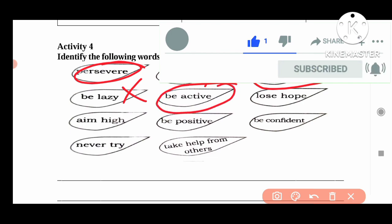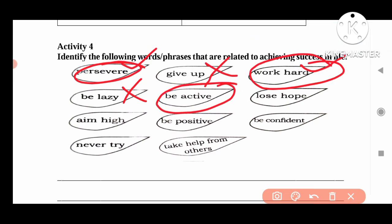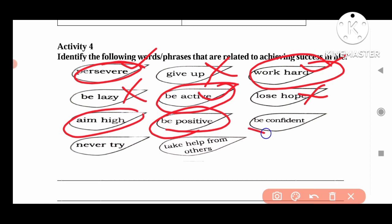'Be active' — yes, this is also related to achieving success. 'Lose hope' — no, this is wrong. If we want to be successful in our life, we need to have a positive attitude and hope. Then we reach high goals.